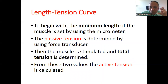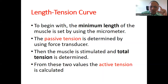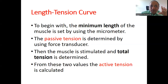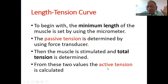How is the experiment performed? To begin with, a minimal length of the muscle is set — for example, 1 or 2 inches — using the micrometer. The passive tension is determined using the force transducer while the muscle is at rest with no stimulation. Then the muscle is stimulated. First the passive tension is recorded, then stimulation is applied, and then the total tension is determined. From these two values — passive tension and total tension — the active tension is calculated.